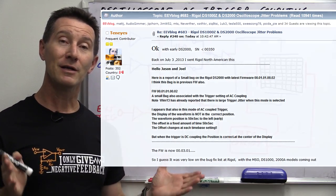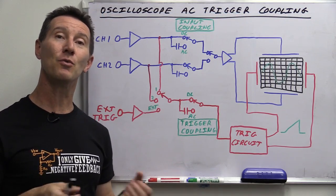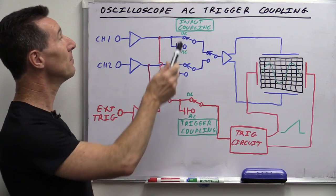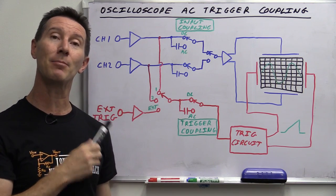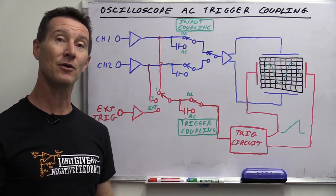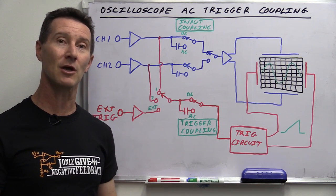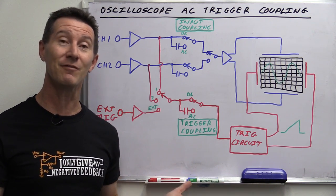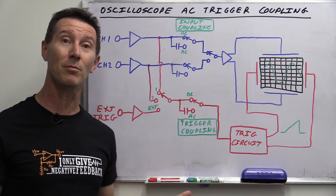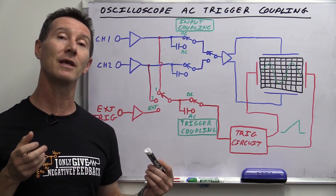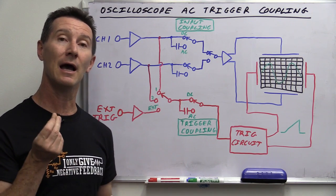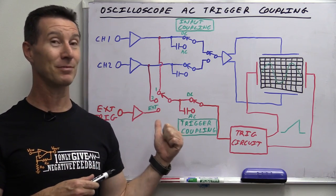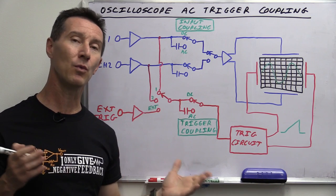A lot of people seem to have an issue with exactly what AC trigger coupling on an oscilloscope is. So many people confused it with input AC coupling — the usual AC-DC input coupling that you're used to. In fact, a lot of people who have been using oscilloscopes for years said they have no idea what AC trigger coupling does, so they just leave it on DC all the time. This bug in the Rigol oscilloscope only occurs with AC trigger coupling, so I thought I'd do a quick video explaining what it is and exactly why you would want to use it.